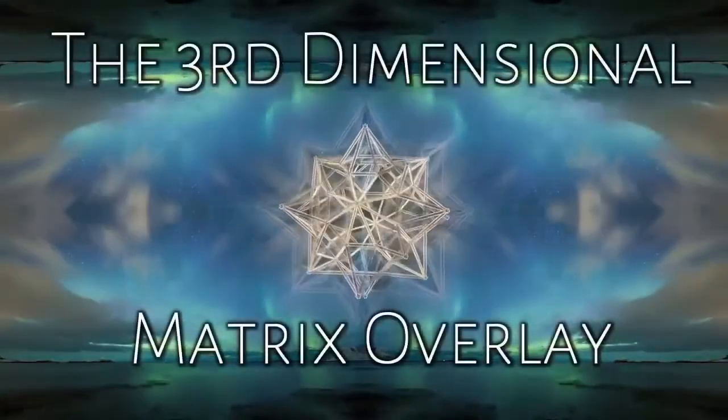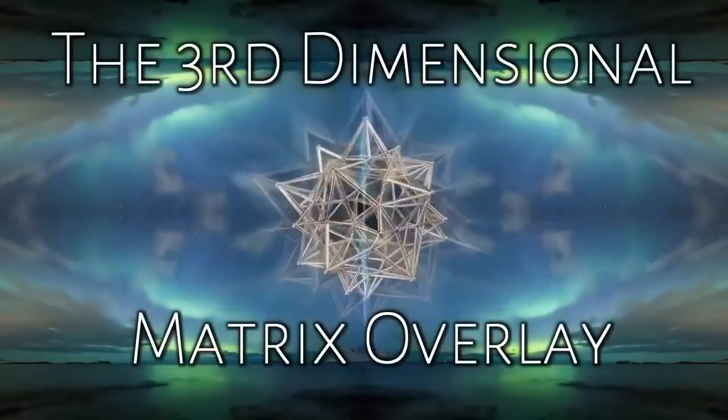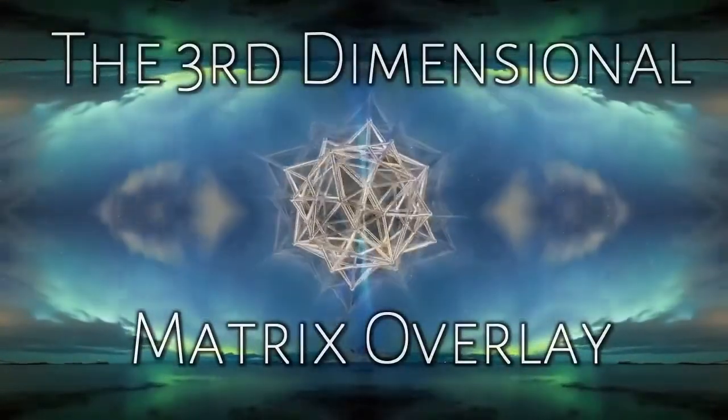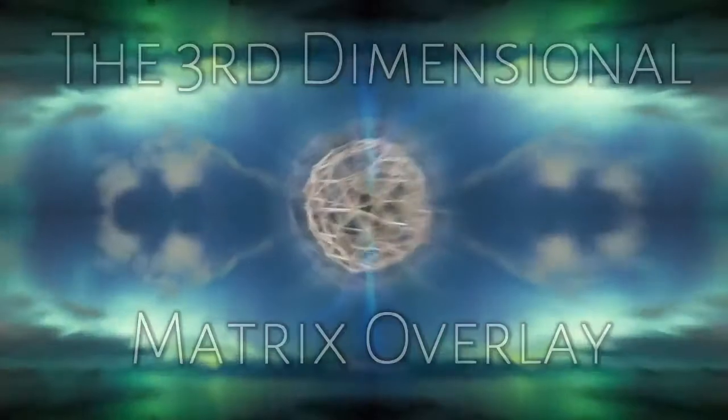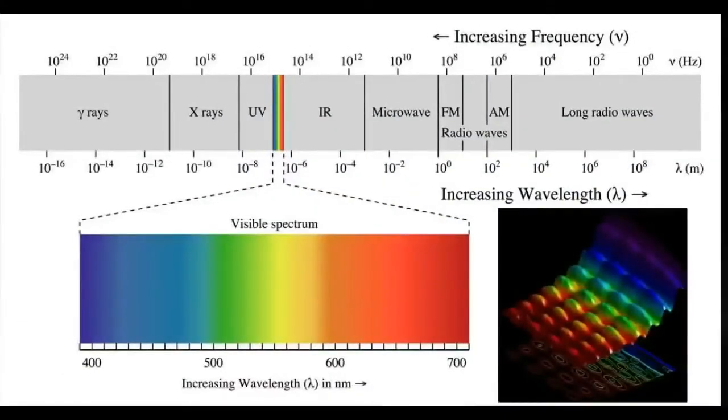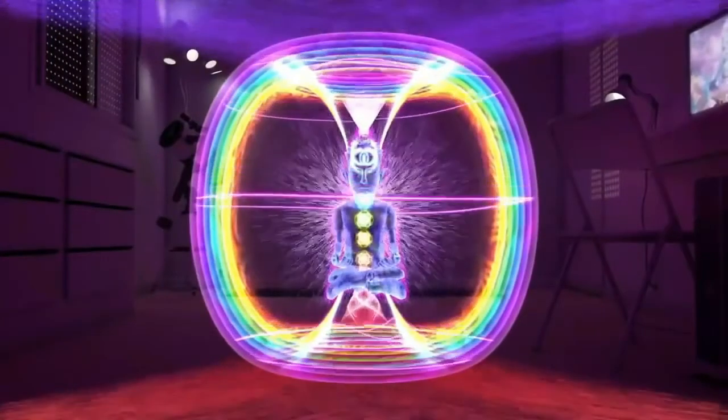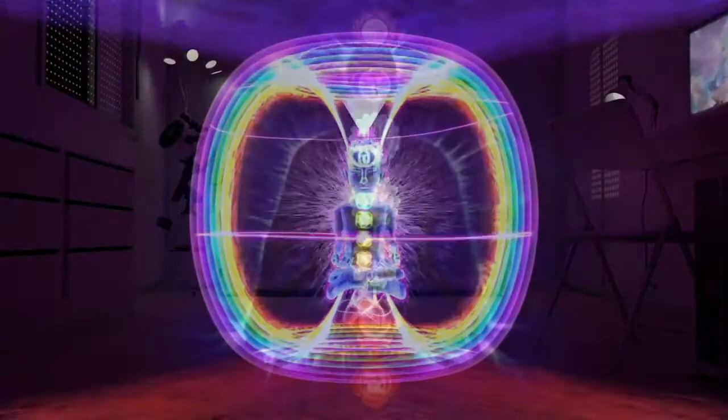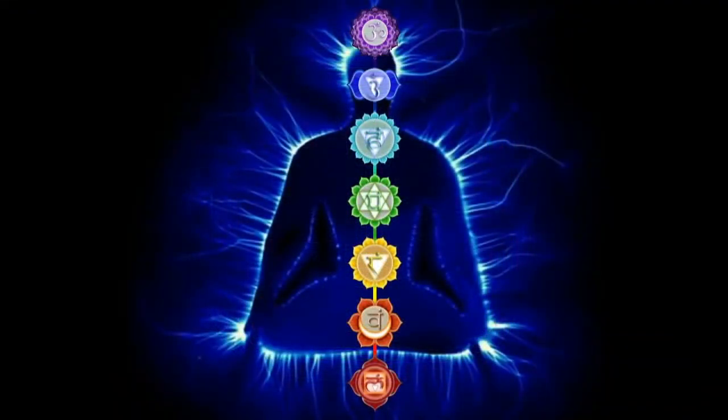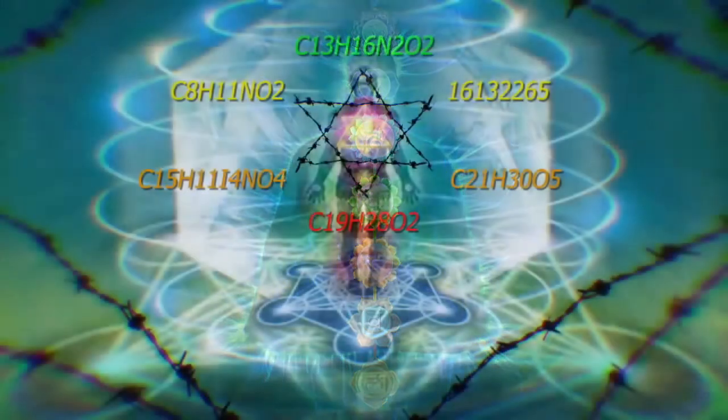Essentially, there is an elaborate overlay burying the original template of Earth. In my last video, we talked about the visible light spectrum and how infinite potential has been converted into finite potential via this system of seven. Our heart energy has been spread into a rigid system, therefore binding us to electromagnetic fields.